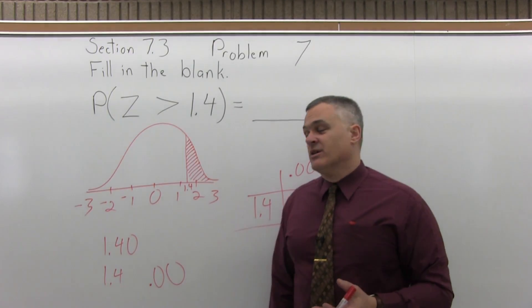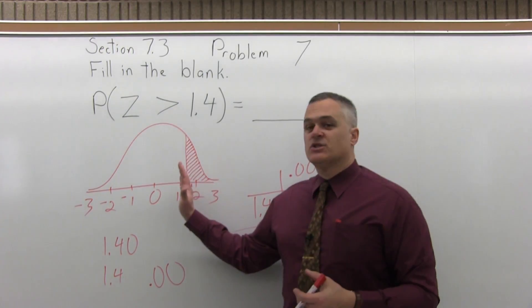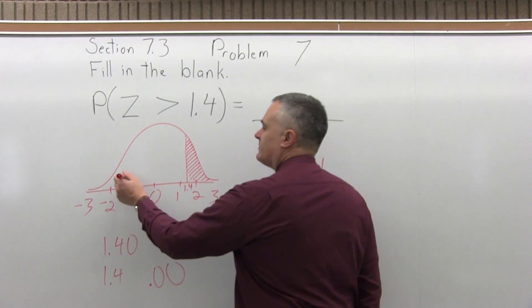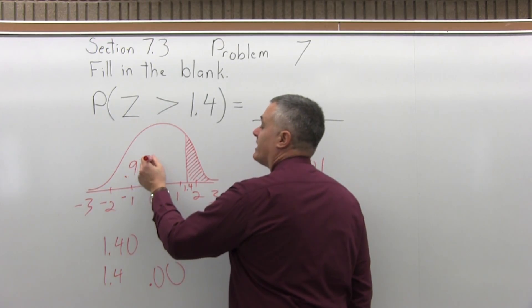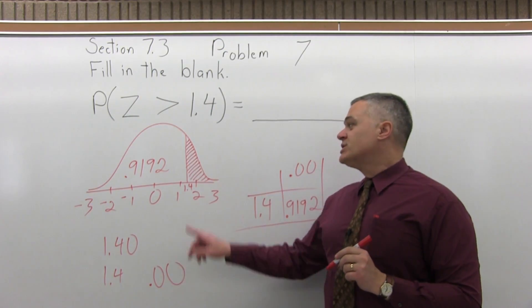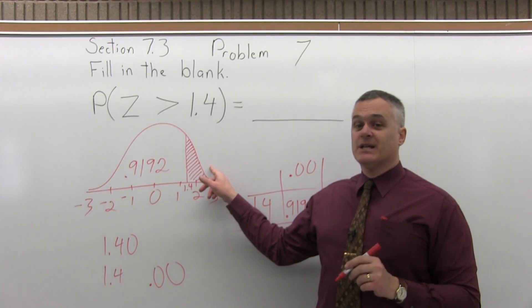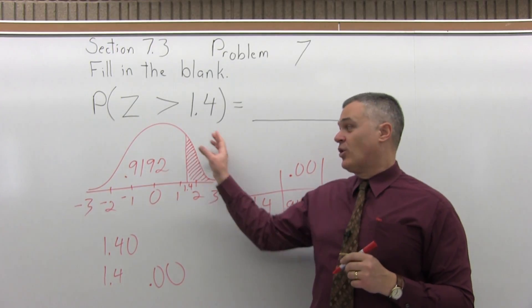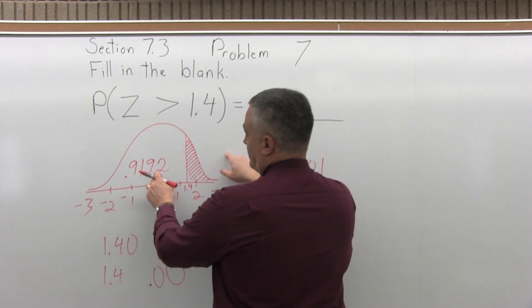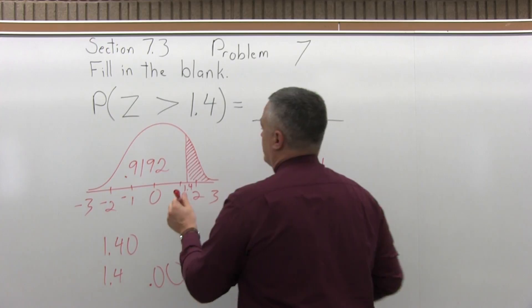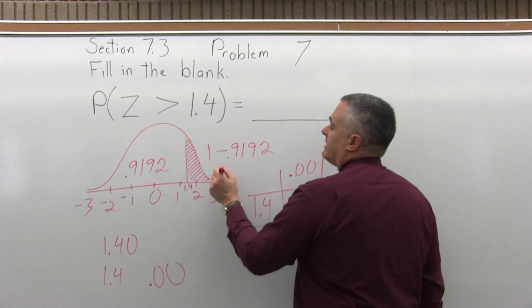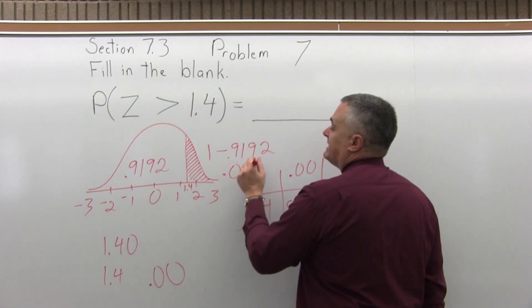Now in this case, that's not the answer. The chart is only set up to tell us what's to the left of the value that we look up. That's the only way the chart works. So this blank area that I'm not interested in has an area of .9192. So the shaded area that I am interested in will be 1 minus .9192, because the whole graph of the bell curve adds up to 1. So 1 minus the blank area that I don't want must give me the shaded area that I do want. So if I have 1 minus .9192, that comes out to .0808.